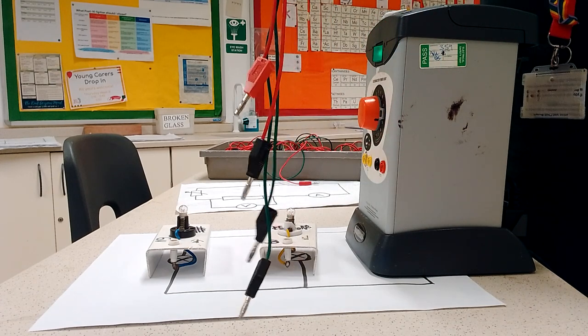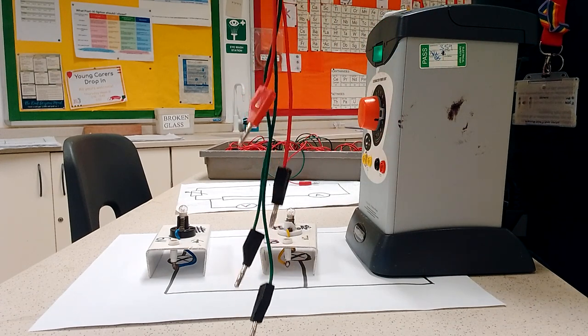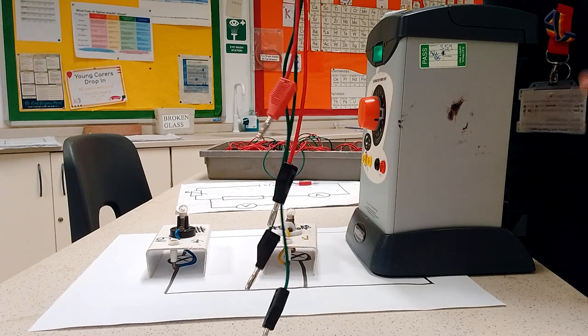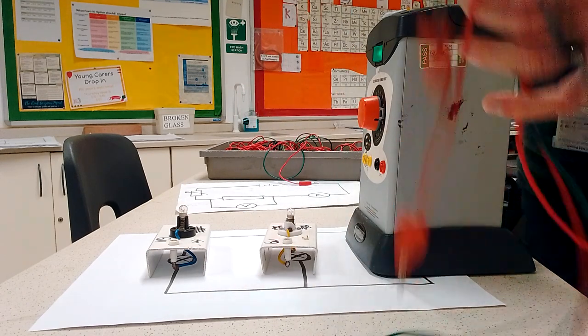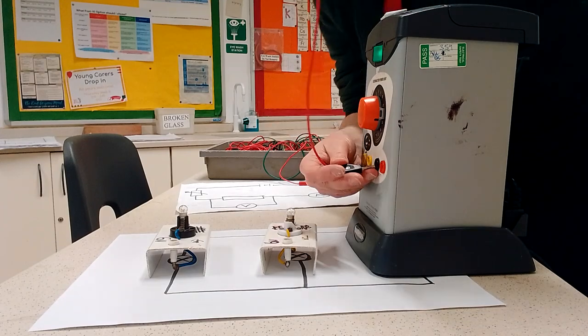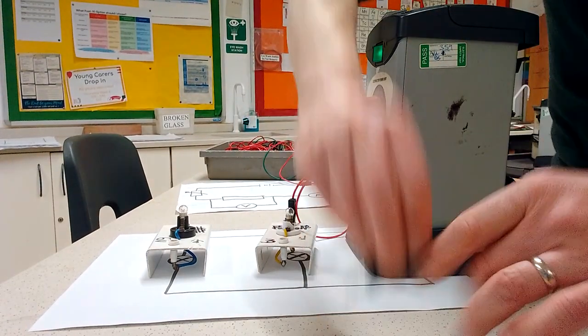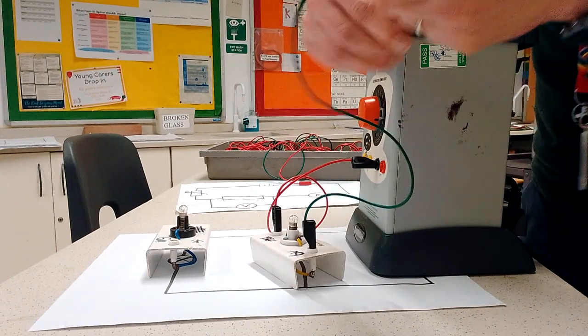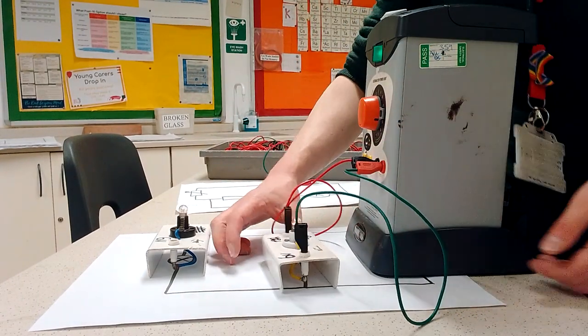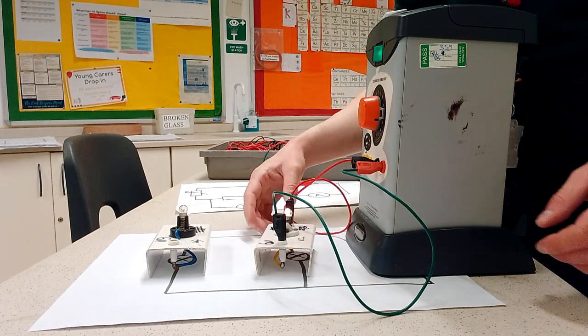Now, if you end up getting a big pile of wires and bulbs, you can easily get confused. So my advice is only get what you need. Let's try to connect up one route first of all. Success. One of the bulbs is lit.